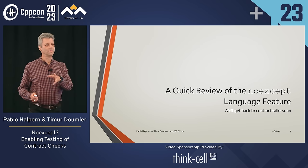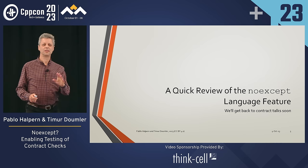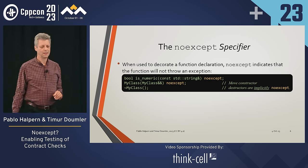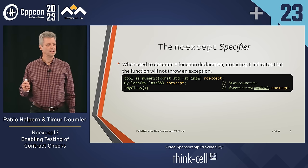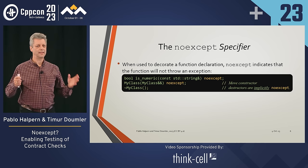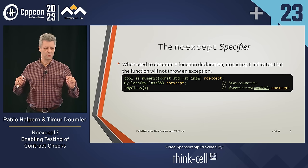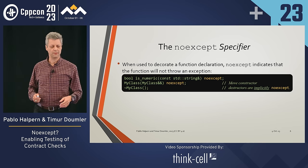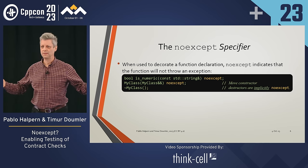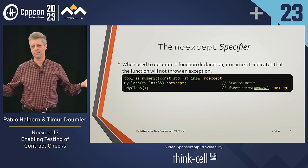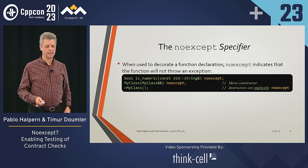We're going to review the noexcept language feature itself without judgment for the moment. The noexcept specifier is used to say: this function will not throw. We have three things here that will not throw — the isNumeric function (a plain free function), the move constructor for a class, and the destructor.